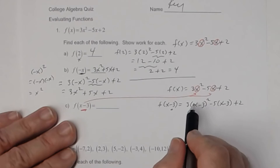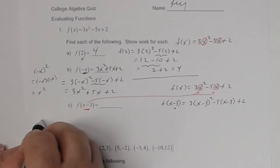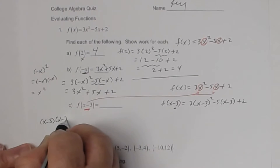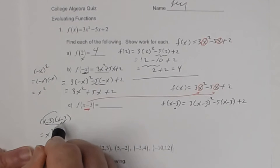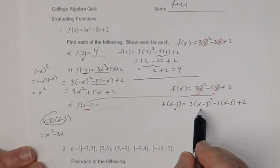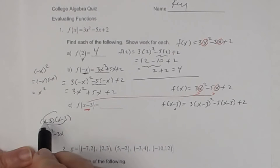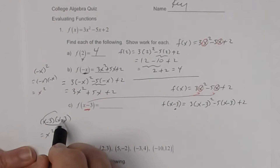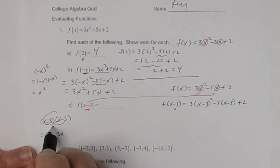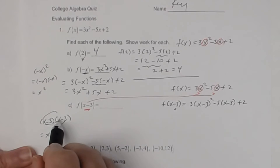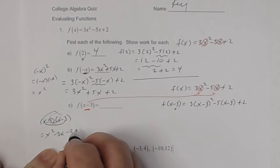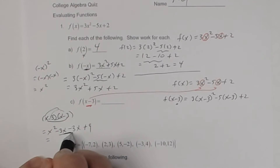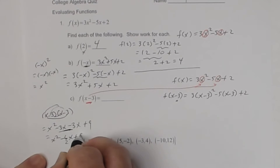Using the order of operations, I've got to figure out what x minus 3 squared is. So x minus 3 squared means x minus 3 times itself. Using the FOIL method: x times x is x squared. The outer, x times negative 3 is negative 3x. Remember, whenever you square a binomial, the outer and the inner are always going to be identical. So negative 3 times x is also negative 3x. And then negative 3 times negative 3 is positive 9. Combining like terms, I get x squared minus 6x plus 9.